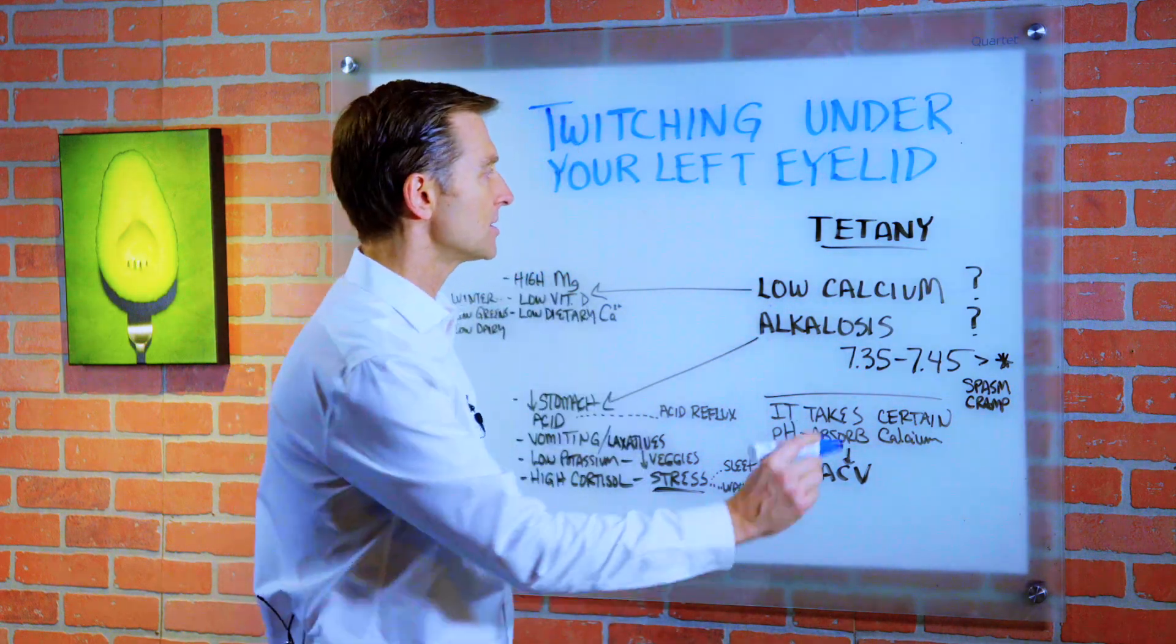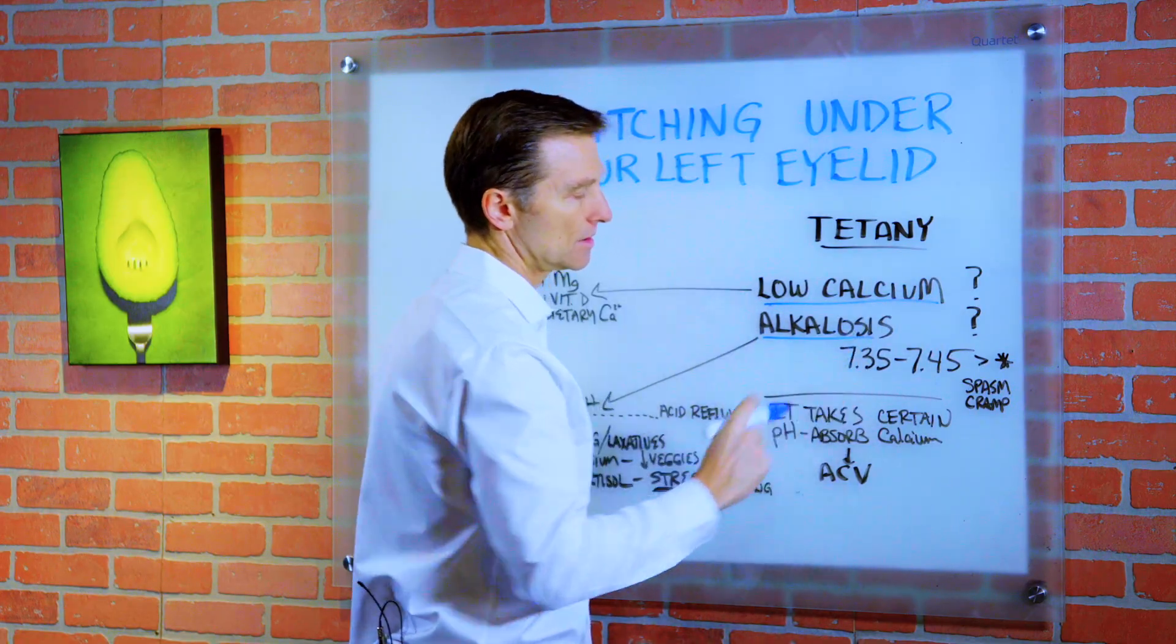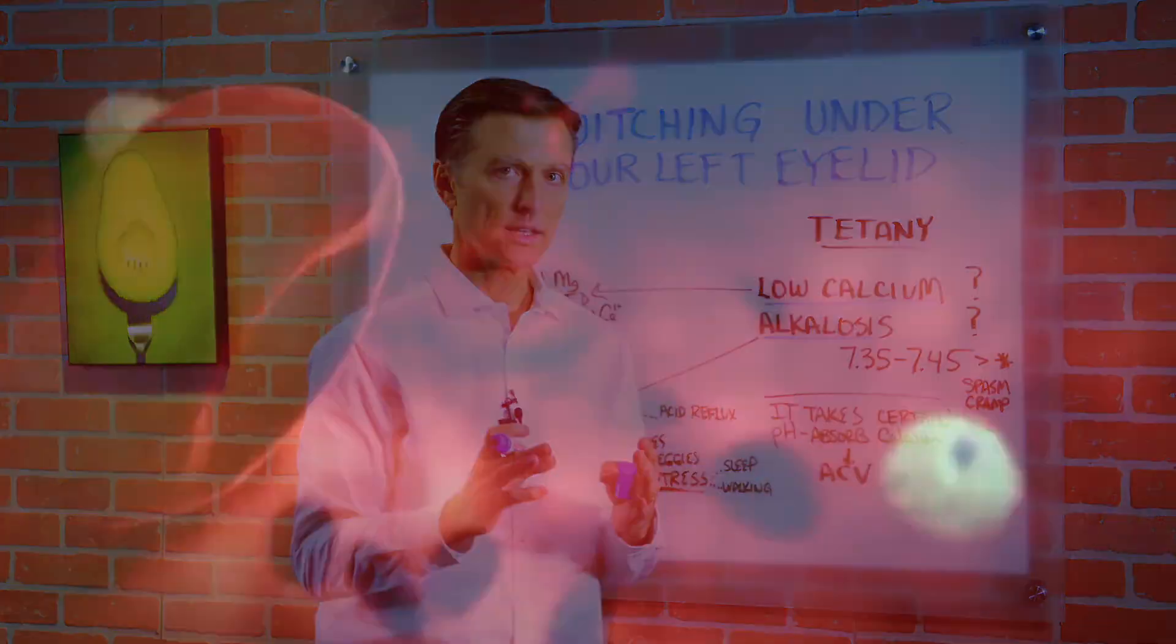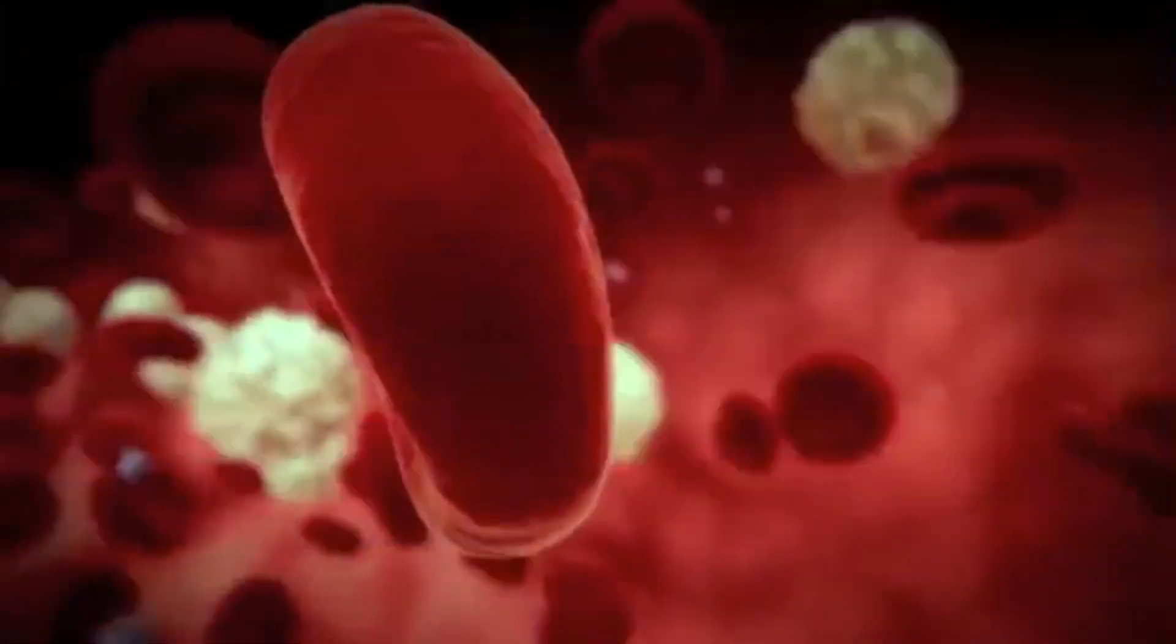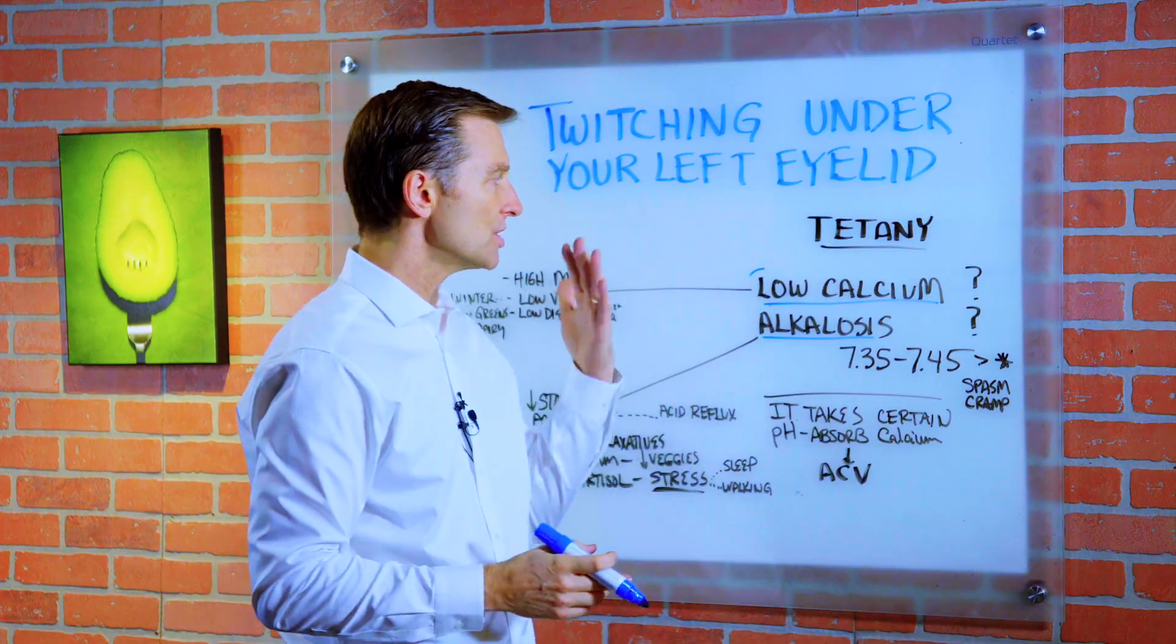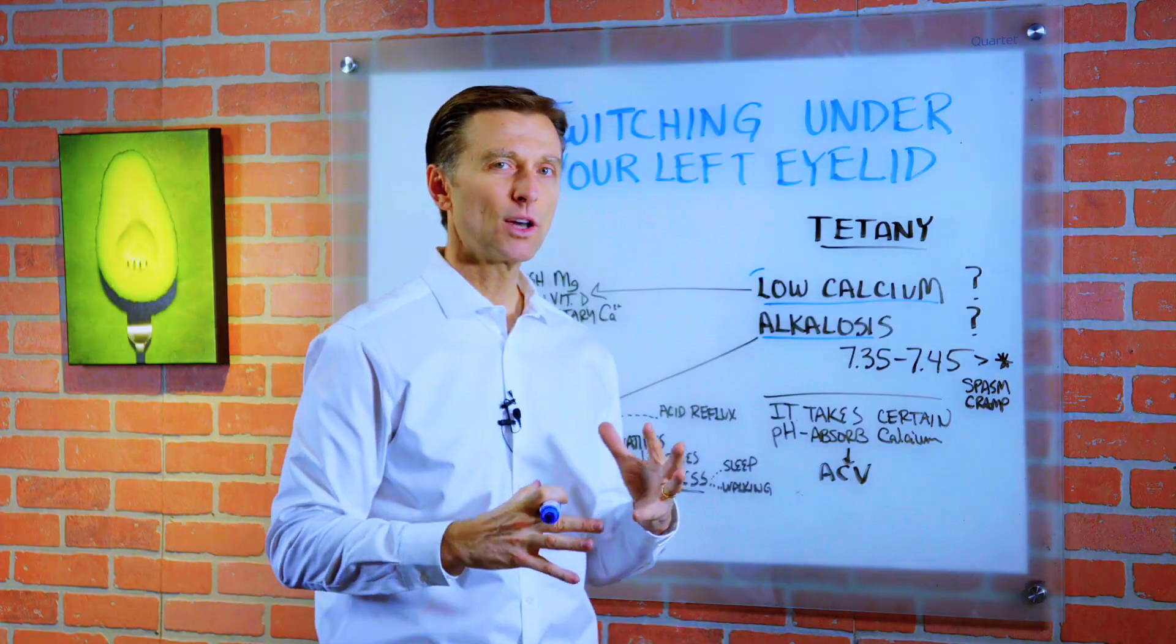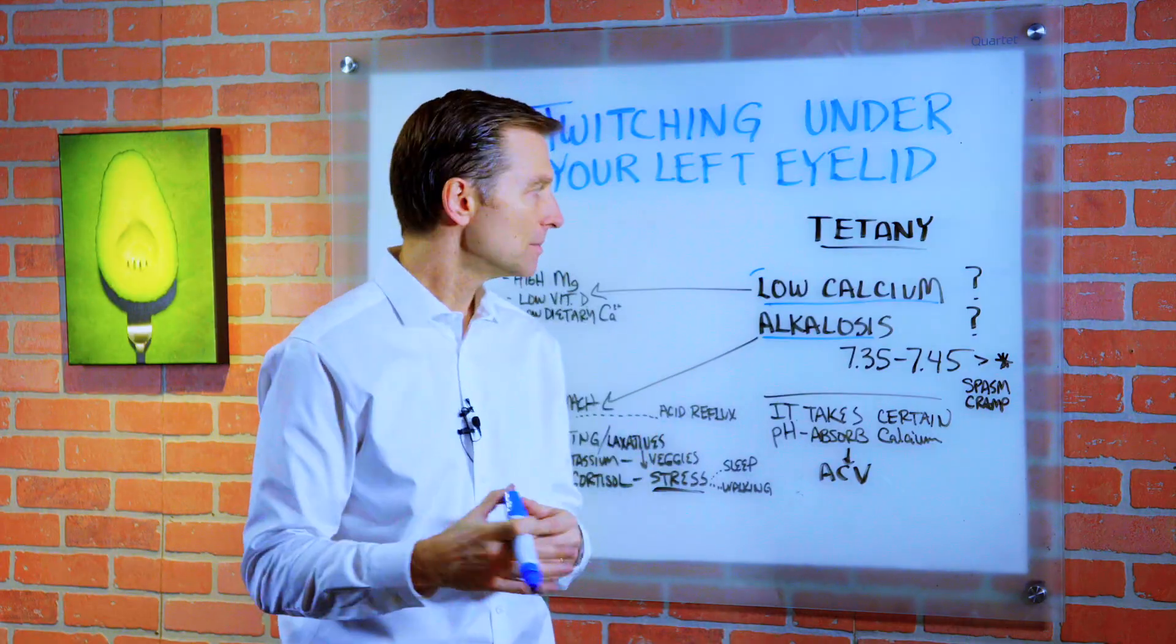The two main causes of tetany are low calcium and alkalosis. It means your blood is a little too alkaline. Normally your blood is alkaline, but it's just a little out of range. When you have someone that has tetany twitching, it's kind of like a little red flag or a little clue that there's something going on in the body that's not right. There's an imbalance of something.